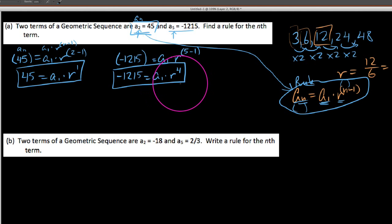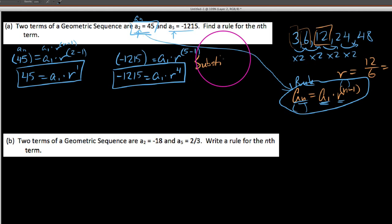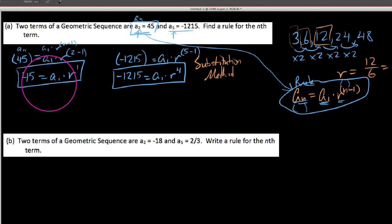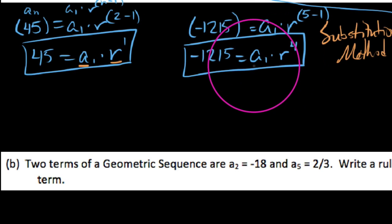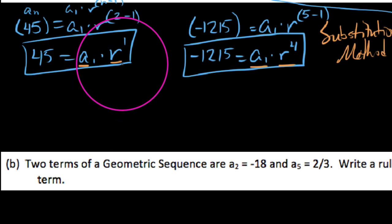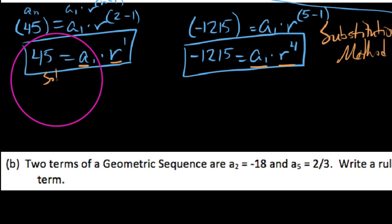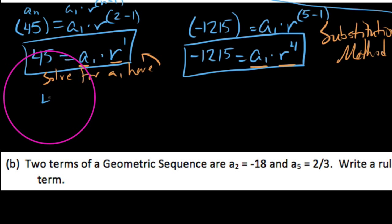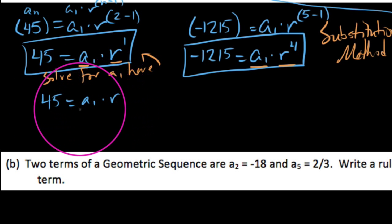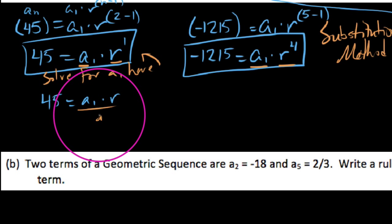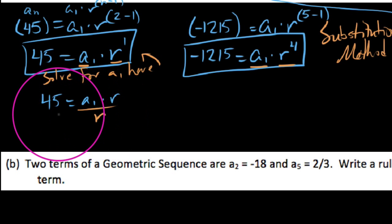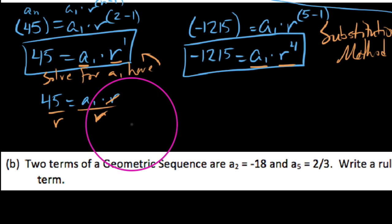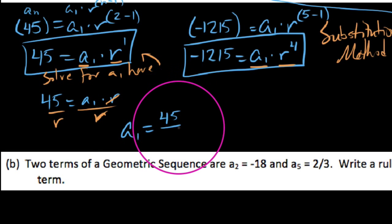The thing is, I want to find out what a1 and r are, and we're going to do it using the substitution method. Remember, substitution method says: pick a variable — either a1 or r — get it by itself and plug it into the other equation. So what I'm going to do is solve for a1. I'll take 45 equals a1 times r and divide both sides by r. These r's cancel out, and I'm left with: a1 equals 45 over r.